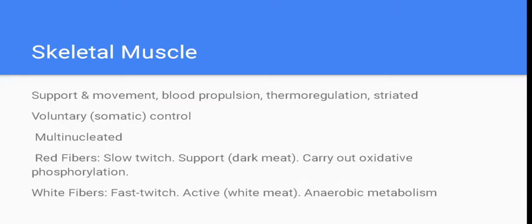You have different types of muscles. Skeletal muscle is for support, movement, helps your blood move around the body, helps regulate your temperature, and it's striated. It's under voluntary control, which is somatic. It's multinucleated, meaning you have multiple nuclei in the cells — the MCAT might ask you on that. Then red fibers versus white fibers: red fibers are slow twitch, more for support, and carry out oxidative phosphorylation. White fibers are more active — like white meat — and use anaerobic metabolism.